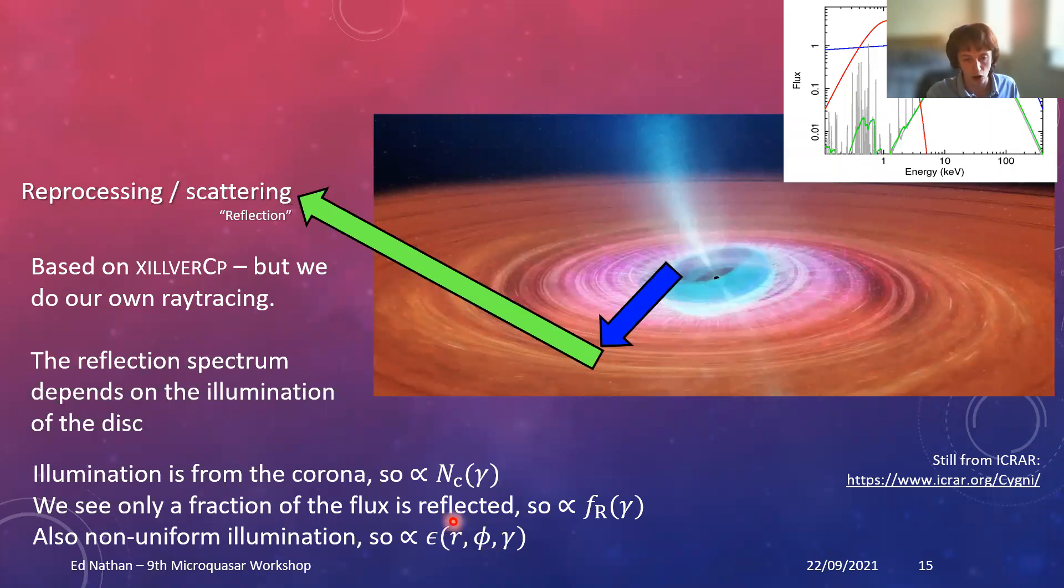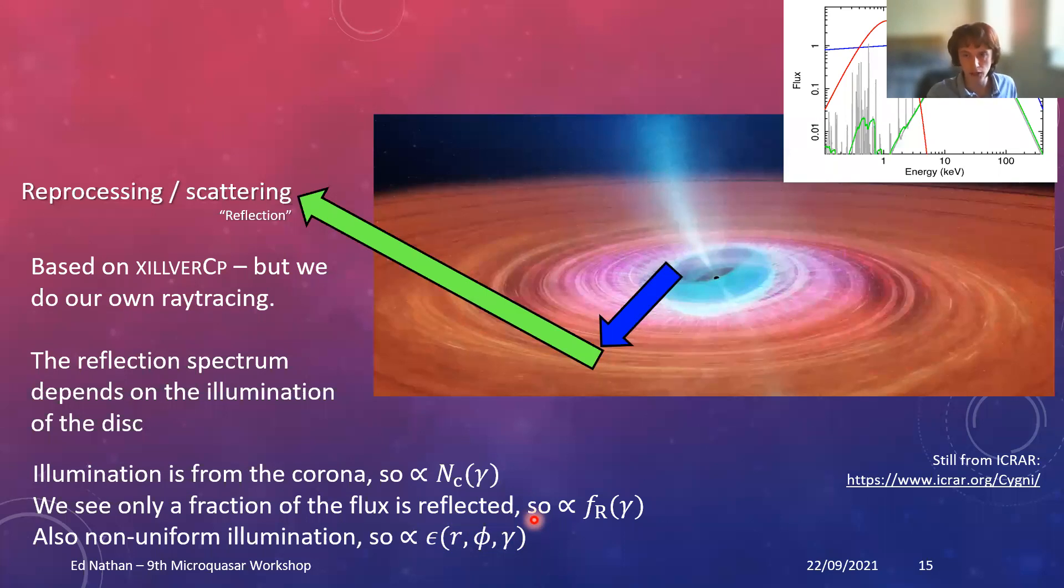We're going to say that we're only going to see a fraction of this from our point of view. We're going to have a reflection fraction which we also have with this four component variance in QPO phase in this two harmonic motion. Finally, we're going to say we've got an emissivity profile which is going to be non-uniform, so it's going to depend on the disc coordinates and also QPO phase. We're going to break that up somewhat. First of all, we are not going to consider any particular geometry like a lamppost. We're going to do this more phenomenologically and say the radial dependencies are a twice broken power law, which is quite often done now. We're also going to say we've got disc angle and QPO phase dependence.